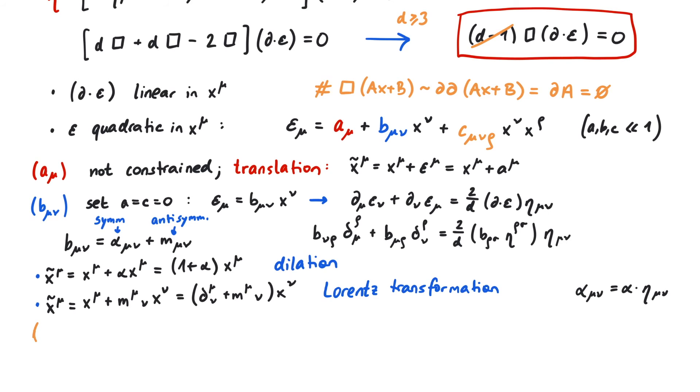Finally, transformations using only the last term are called special conformal transformations. They are given by x plus c times x times x. And one can show that this is equivalent to x^mu plus 2 over d c_nu_nu_rho x^rho minus 1 over d c_nu_nu_mu times x squared.